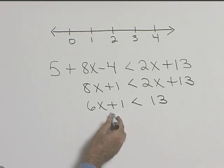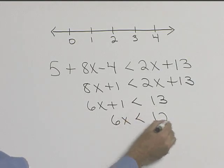Let's now subtract 1 from both sides. If we subtract 1 from the left-hand side, we'll have 6x is less than 13 minus 1, which is 12.